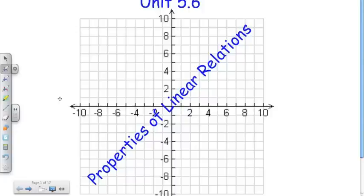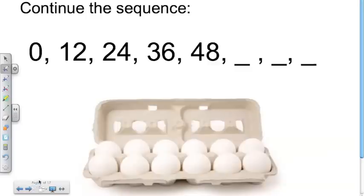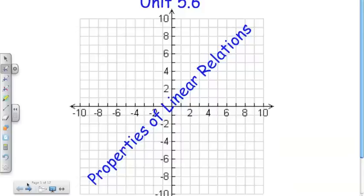We'll come to Unit 5.6. This is Properties of Linear Relations, and for this video I'll try to speed up the pace a bit. If you do feel that you're getting lost, feel free to watch certain segments over again. We talked earlier about functions, and functions being special types of relations. Now we're going to talk about linear relations, which is somewhat the same thing. Linear relations are special types, or a subset of relations.